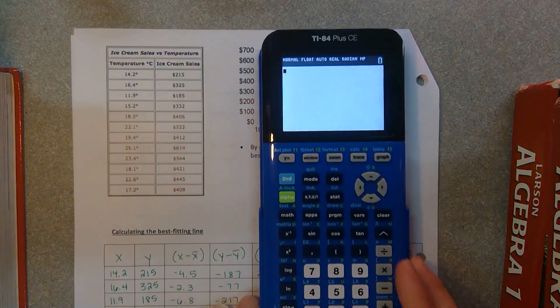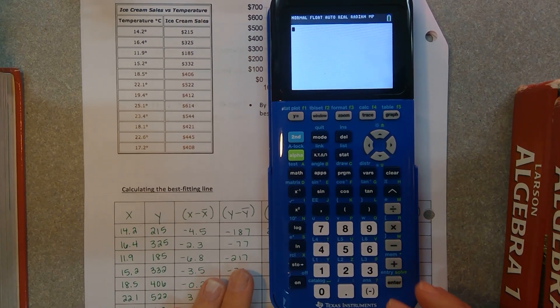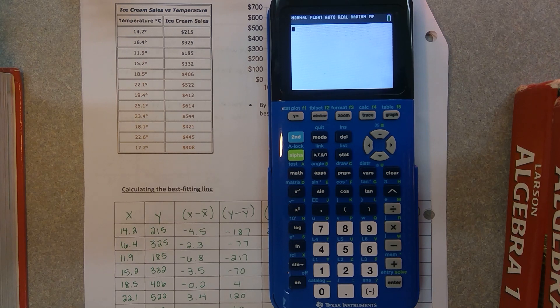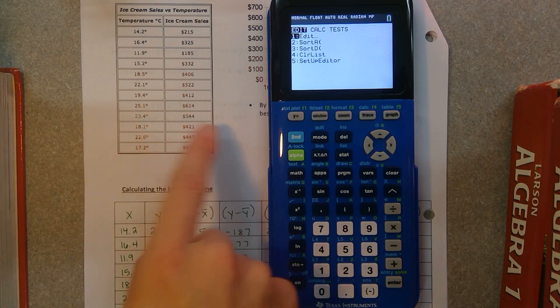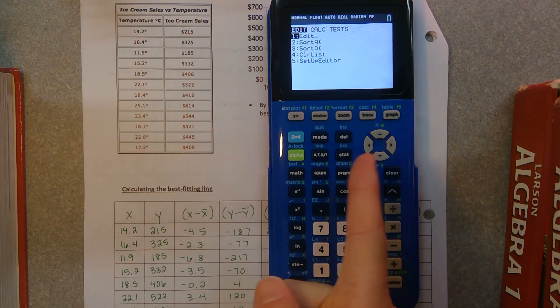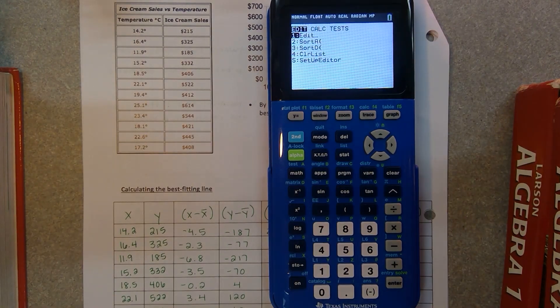So on your calculator, what you should notice is that there's a button that's called the stat button. This is a lot of statistics that we're dealing with here. So if you push the stat button, we want to enter these two lists into our calculator so that it can do all of this work for us. Now we want to edit a list, so hit enter.